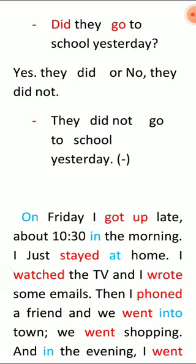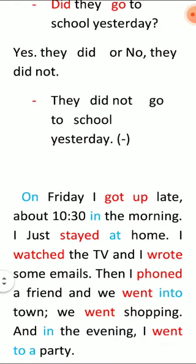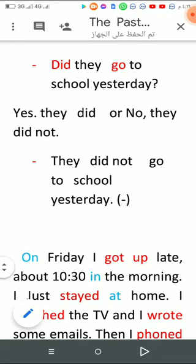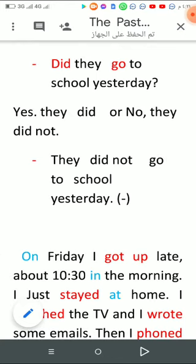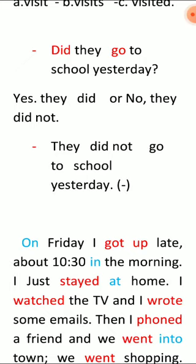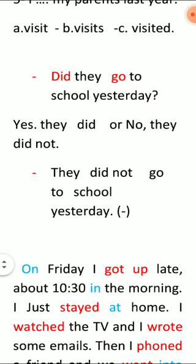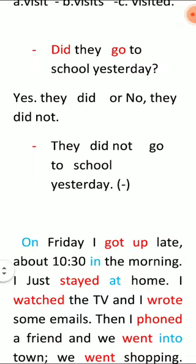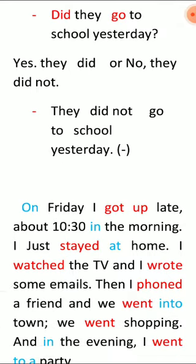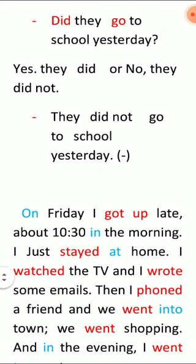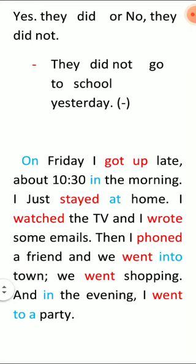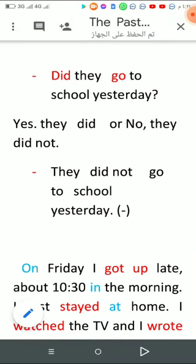They did not go to school yesterday. كده أنا حوّلت الجملة كلها إلى نفي. في أربعة أفعال مساعدة auxiliaries يمكن إحضارها في بداية الجملة. عندنا did من الـ auxiliary verbs / helping verbs. يبقى ممكن أقزّه في الأول، فصار: Did they go to school? صارت سؤال. جاوبنا على السؤال بنفس صيغته. وللنفي: they did not go to school yesterday.